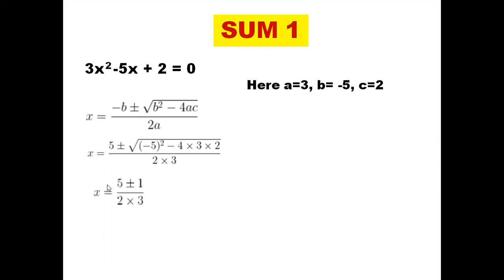So we solve it. It equals 5, plus or minus: (-5)² is 25, and 4 × 3 × 2 is 24. So 25 - 24 is 1. The square root of 1 is 1. So we write (5 ± 1) / (2 × 3). First, 5 + 1 = 6, and 6 / 6 = 1. Similarly, taking the minus sign: 5 - 1 = 4, and 4 / 6 gives us 2/3.